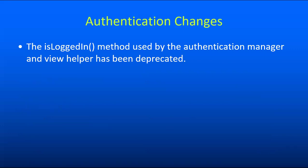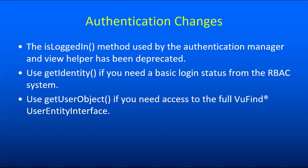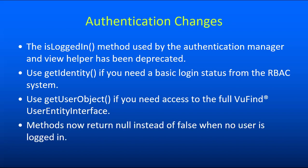A number of changes impact authentication. Historically we've had a method called isLoggedIn in a variety of places that would return either an object representing the logged-in user or false if no one was logged in — not a great use of a method named isLoggedIn, which implies a Boolean value. So we decided to deprecate that and replace it with multiple methods. If you just want a quick check to see if somebody is logged in, you should now use get_identity, which will return an object from the role-based access control system if the user is logged in, or null if they are not.